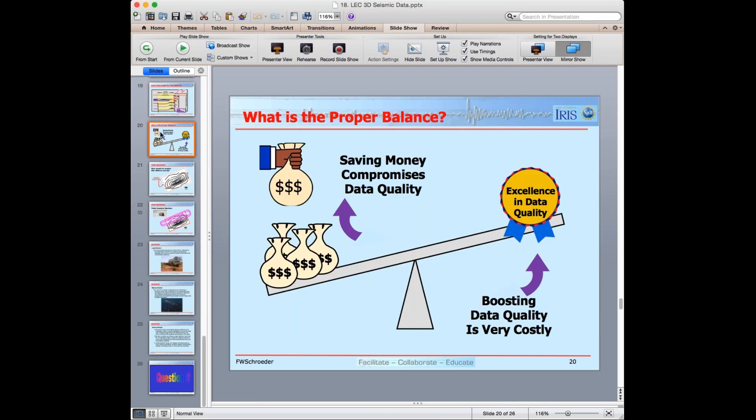The next slide, what is the proper balance? And so I'm showing here a balance beam and we have money at one end and we have data quality on the other. And the point is that if we spend enough money, we can get excellent data. If we start taking money bags away and try to save money on acquisition, then our data quality is going to go down. And so the big question is how much should we spend or let me rephrase that, how much should we spend so that we get the adequate data quality so we can answer the business questions? If I make it too cheap of a survey in terms of acquisition and processing, I may not be able to answer the business questions. And then we spent a lot of money without getting the answers that we desire. Of course, the people in accounting, they don't want us to spend more money than we have to. And so that's where balance comes into play.